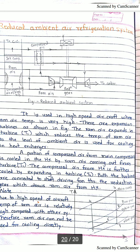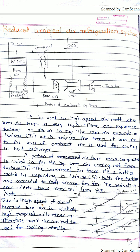On the T-S diagram, process one to two is the ram air pressure rise. From two to three, jet compression increases pressure and temperature. Three to four is the cooling process in the heat exchanger. Note that turbine T1 operates on the ram air and turbine T2 operates on the compressed air. From four to five, compressed air expands in T2 — pressure falls to cabin pressure and temperature drops. From five to six, the air enters the cabin and absorbs heat, increasing in temperature.